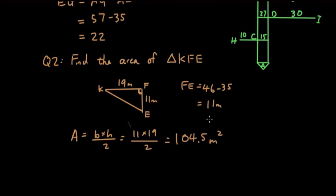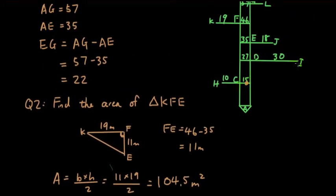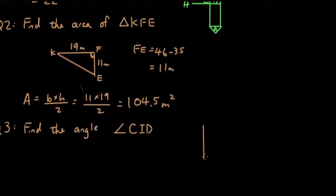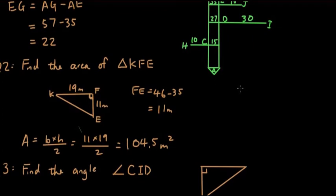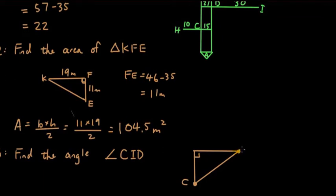Question three: find the angle CID. Here's point C, here's point I, here's point D. We want to find the angle CID, which is this angle here. Let's draw that out separately — we have a right angle triangle with point C, point I, and point D. The middle letter I is where the angle is.